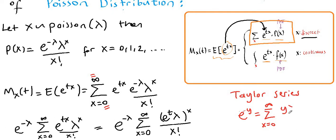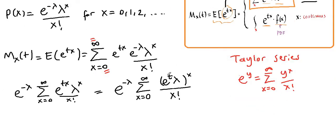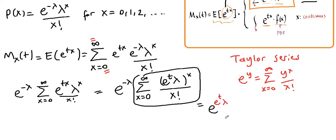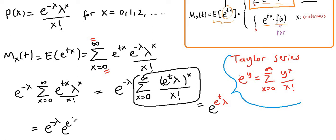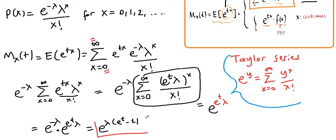Recalling from Taylor series that e to the Y equals the summation from X equals 0 to infinity of Y to the X over X factorial, we can rewrite the summation as e to the e to the t times lambda. So we have e to the negative lambda times e to the lambda times e to the t. Merging the exponents and factoring out lambda, we get e to the lambda times quantity e to the t minus 1. This is the moment generating function of the Poisson distribution.